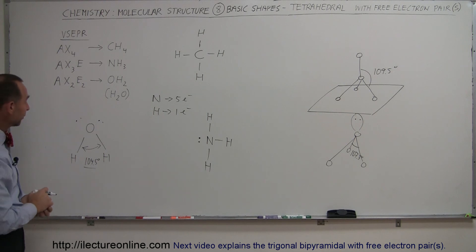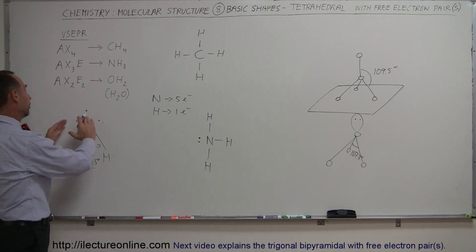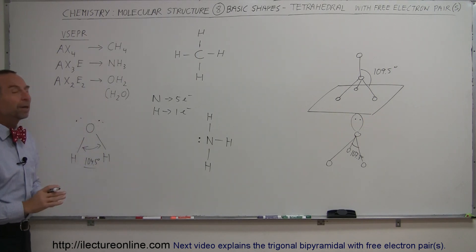So you can see that the basic shape is still there, the tetrahedral shape is still there, but two of the appendages, so to speak, are taken up by the free electron pairs.